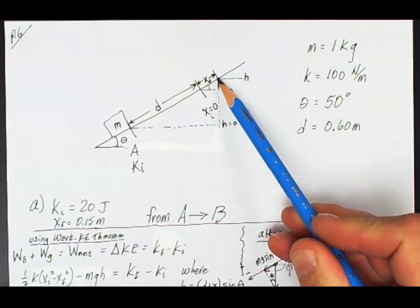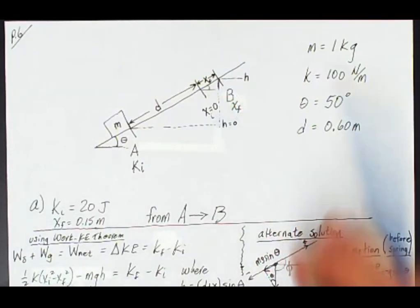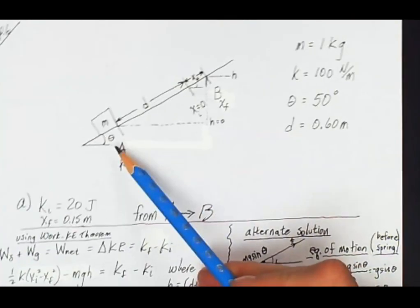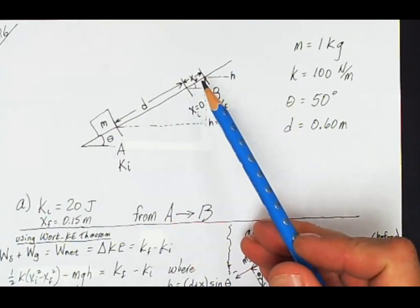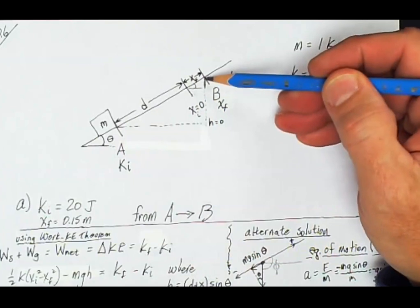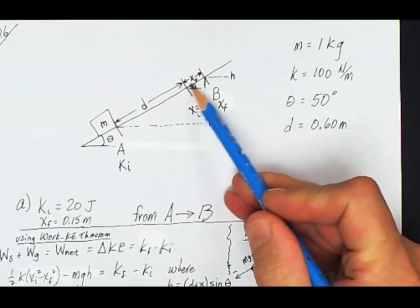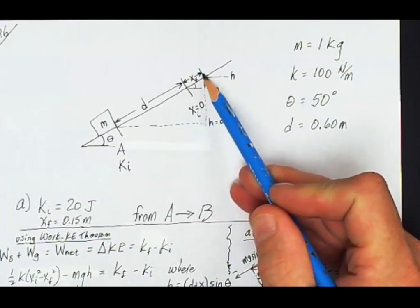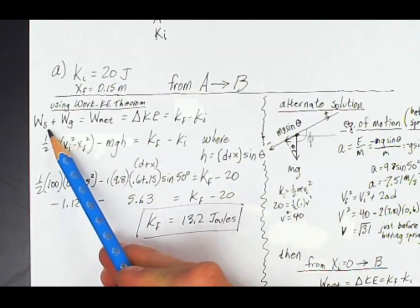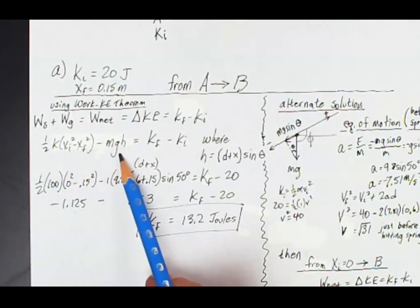How much kinetic energy does it have at location B is the question. So we're going to use the work kinetic energy theorem. During the time the block is moving up the ramp, gravity is acting on it the whole time. So we'll use the work done by gravity over this entire height h. The spring, however, is only doing work during this section right here. Here's my equation for work done by a spring. Here's my equation for work done by gravity.